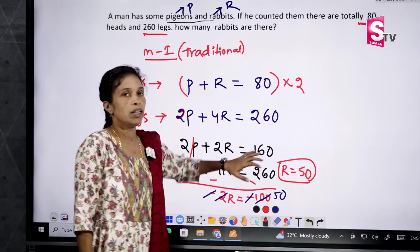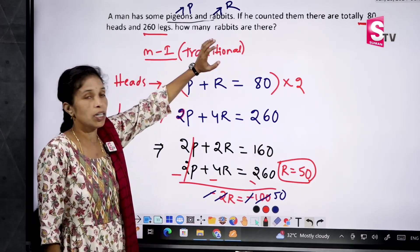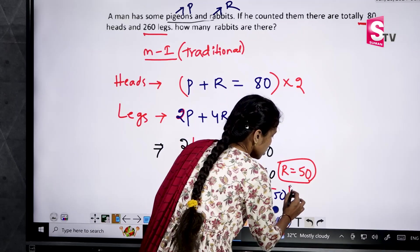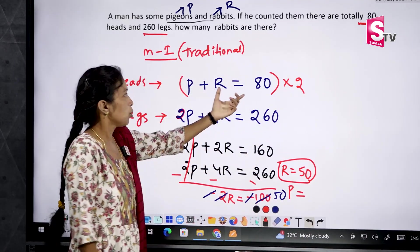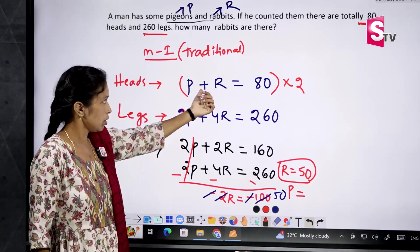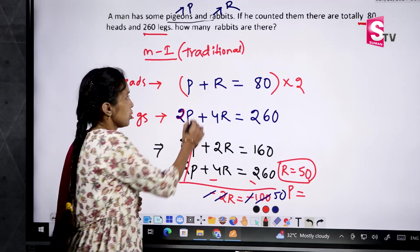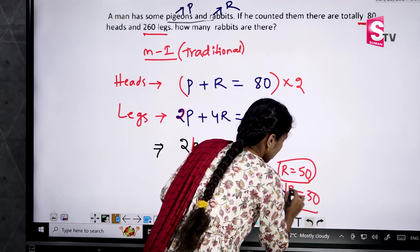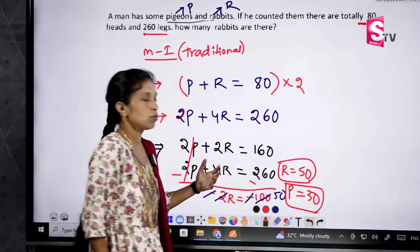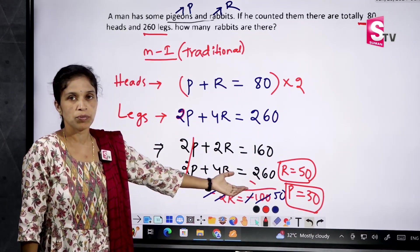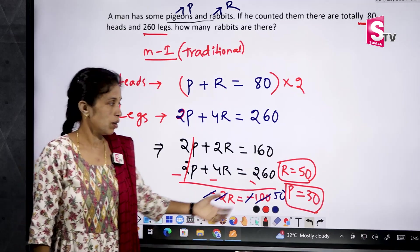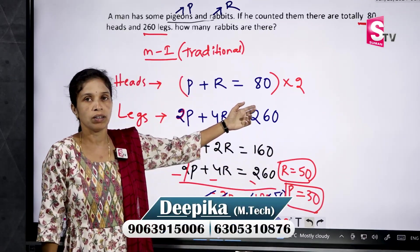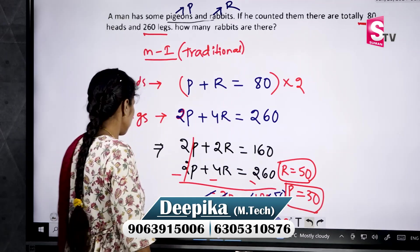So 5 rabbits are there. He didn't ask about pigeons, but if he does: the total heads are 8, rabbits are 5, so the remaining pigeons are 3. There are 3 pigeons and 5 rabbits, and the sum of these two is 8. Now let's see the shortcut method.